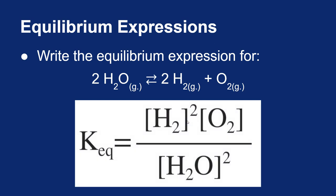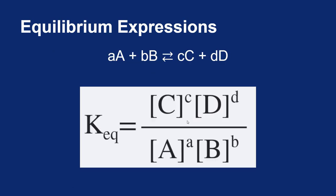Hopefully, your equilibrium expression looks something like this. Your equilibrium constant K is going to equal your concentration of hydrogen squared times the concentration of oxygen divided by the concentration of water squared. We always do products over reactants, and the exponents come from the coefficients in the balanced equation. So our equilibrium expressions always follow this generic pattern.